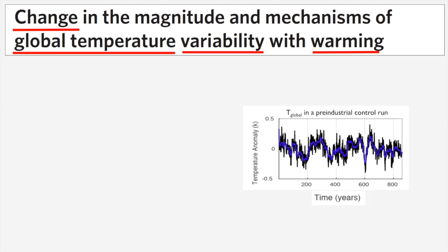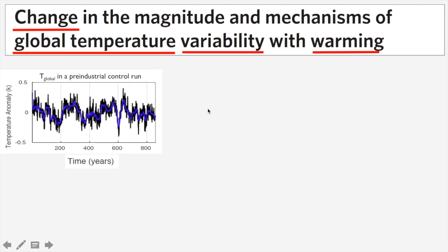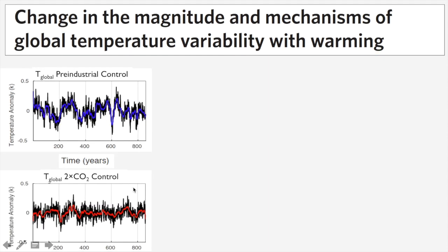The main experiment we analyze compares the pre-industrial control run in the GFDL CM3 model to a similar 900-year control run in the same model after global atmospheric CO2 has been doubled. The model has equilibrated to its new warm state after CO2 doubling, so we can then analyze the new unforced variability in the warmed climate state.